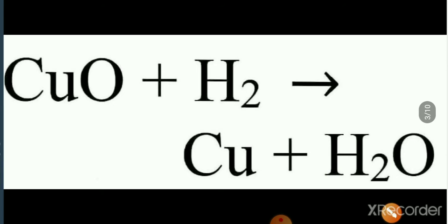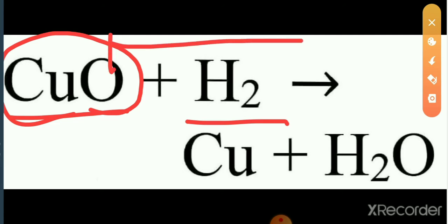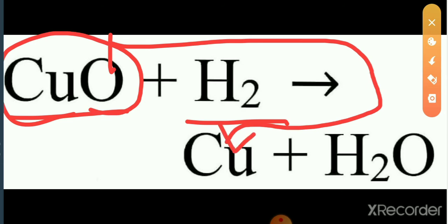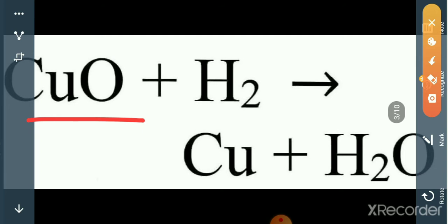All of you look on this equation. Copper oxide reacts with hydrogen. In this reaction, copper already has one oxygen atom combined. But when it comes to the product side, the oxygen is removed or lost.